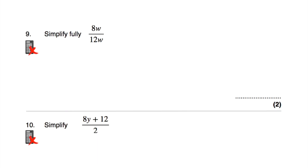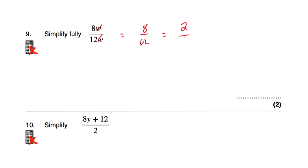Question number 9: simplify fully 8w over 12w. The w's cancel out — w divided by w is 1 — leaving 8 over 12. Now simplify: both 8 and 12 are divisible by 4. 8 divided by 4 is 2, and 12 divided by 4 is 3. So the answer is 2 thirds.